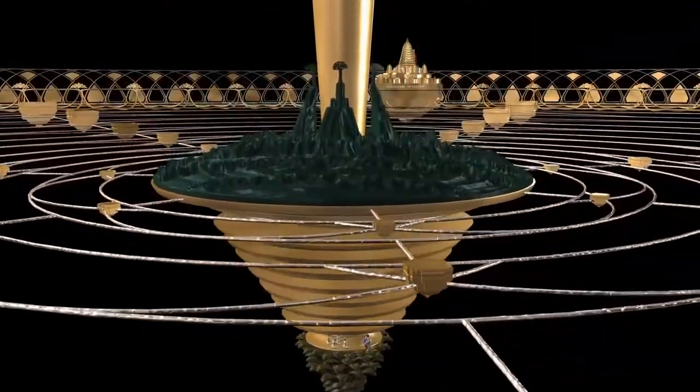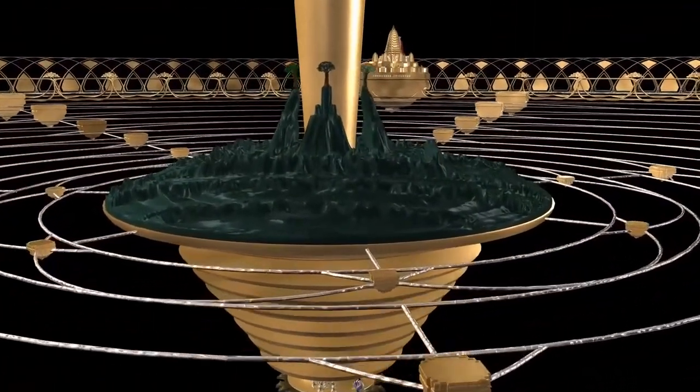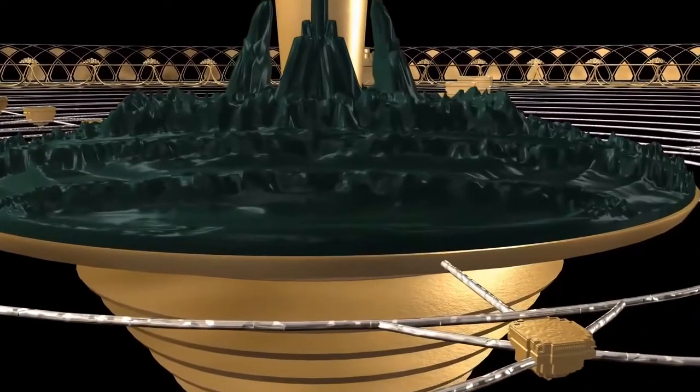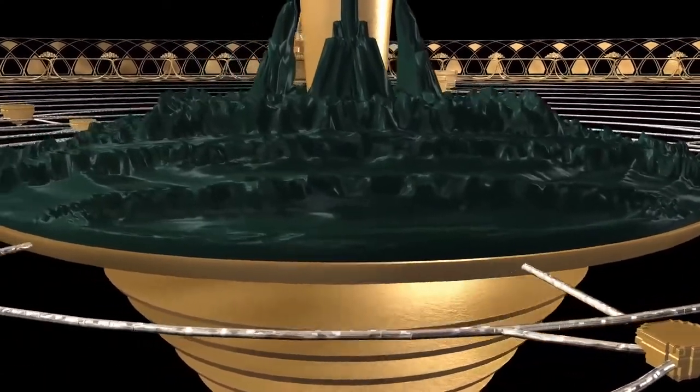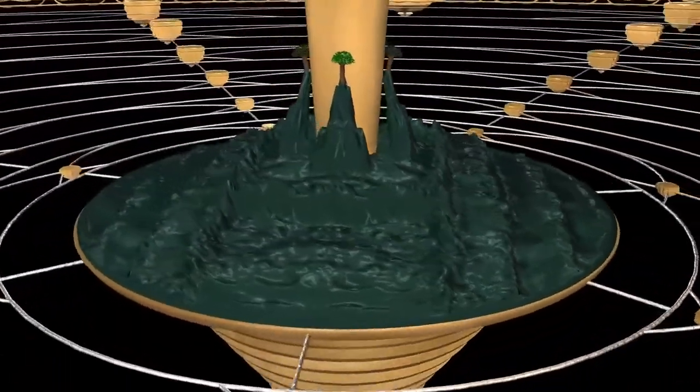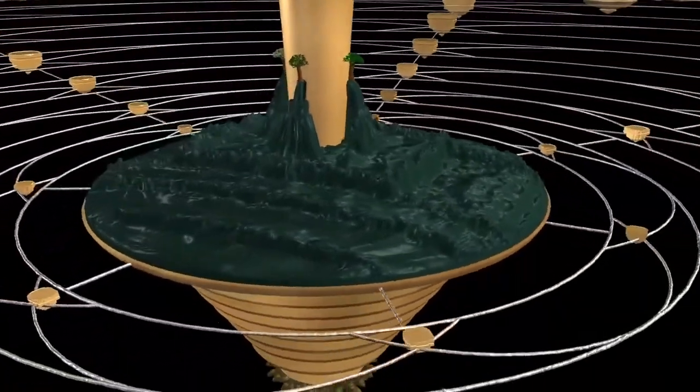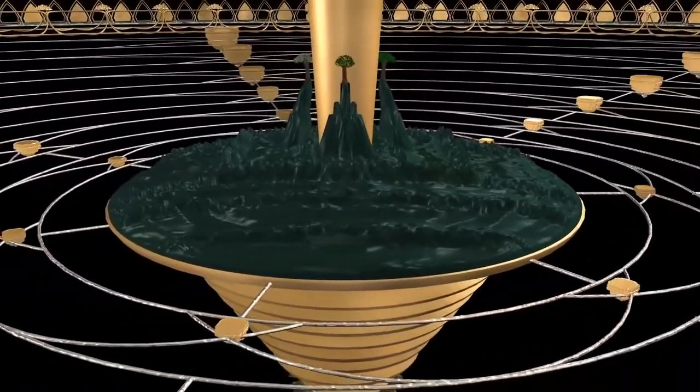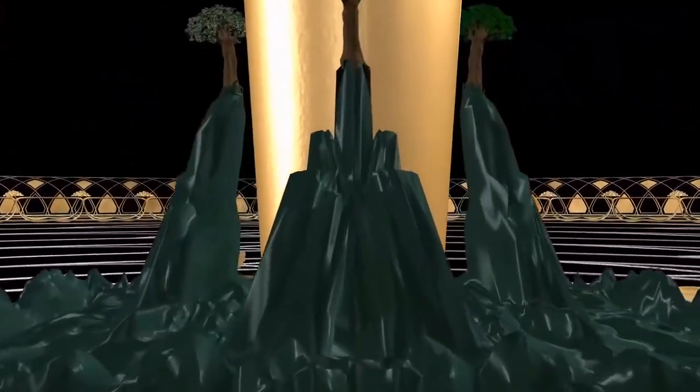Here we can see Jambudwip, the central island of Bhumandala. Bharat Varsha is situated on the southern side of that. There are eight other Varshas with Ilavrata Varsha in the center, various supporting mountains with large trees upon them, described in Srimad Bhagavatam.